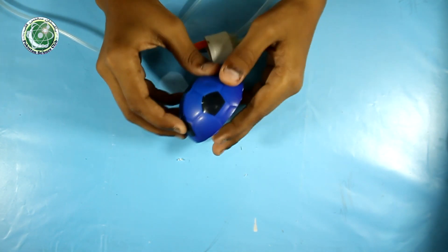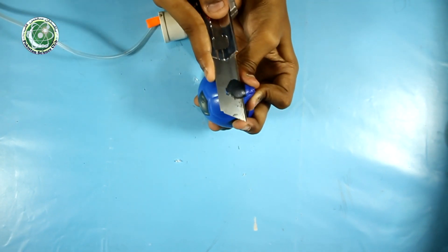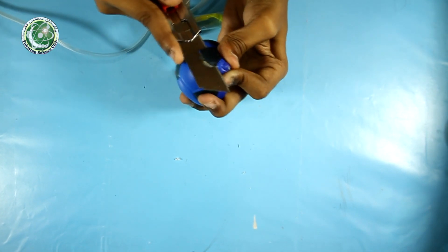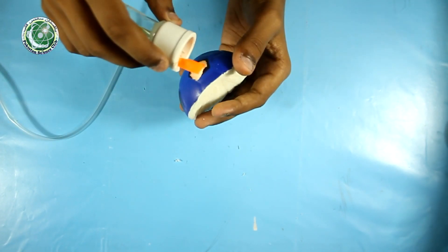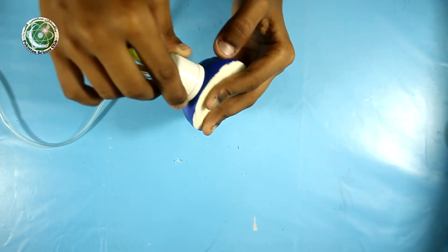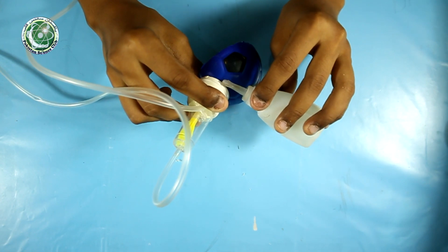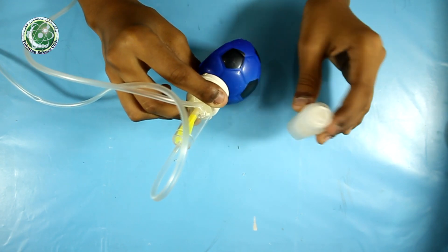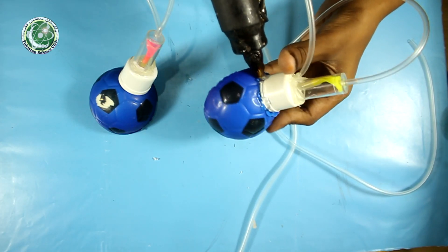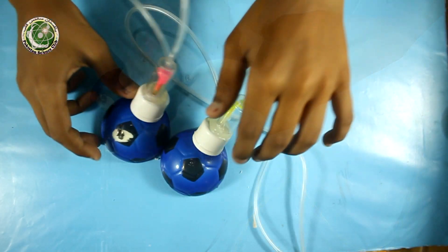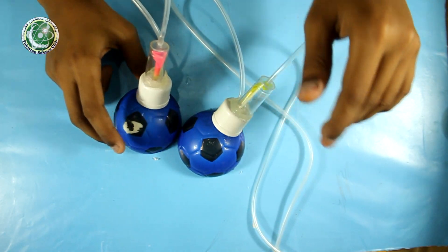Now I will take the stress ball and make a hole on top of it. Now I will take the valve and I will paste it on top of the ball.